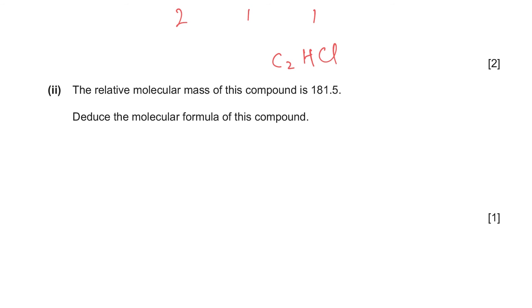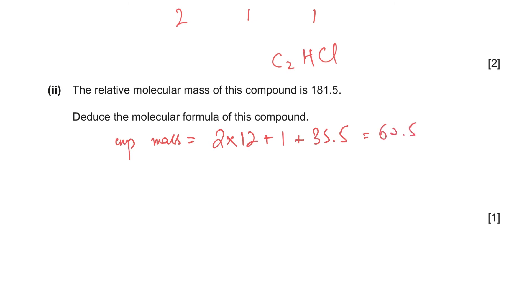The relative molecular mass of this compound is 181.5. The empirical mass of C2HCl is 2×12 + 1 + 35.5 = 60.5. The ratio is 181.5/60.5 = 3, so the molecular formula is C6H3Cl3.